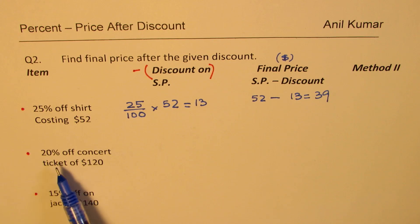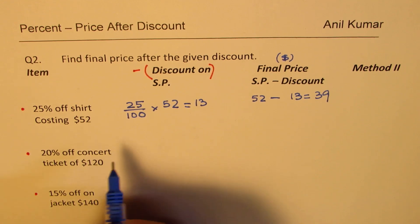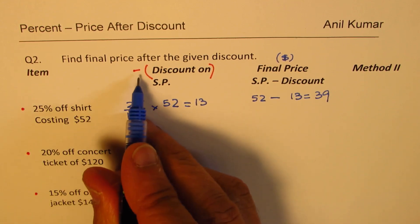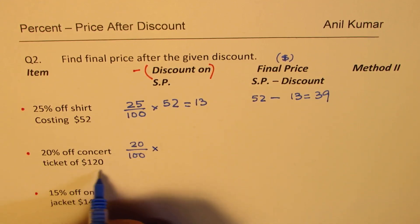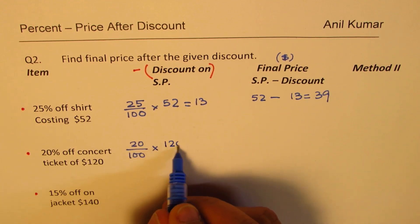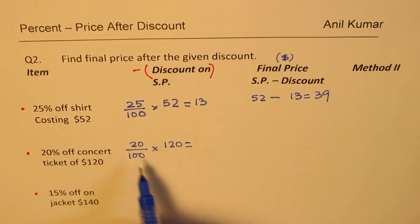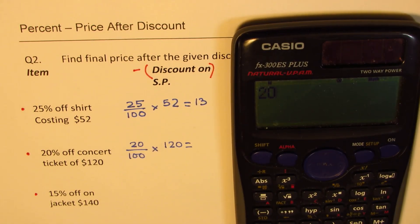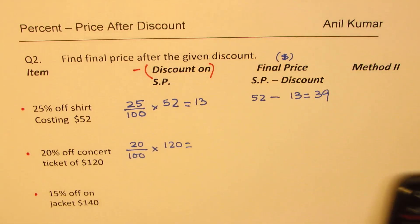Next one here is 20% off concert ticket of $120. So, 20% means 20 out of 100. That is what it means. Off. We'll do minus. And this off is the price, 120. So, let's calculate. That means one-fifth. So, you know it is one-fifth. You could do without calculator. But let's do with calculator. And then we'll divide by 100 to get our answer, which is 24.